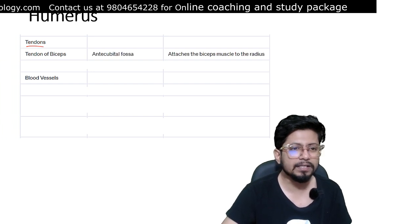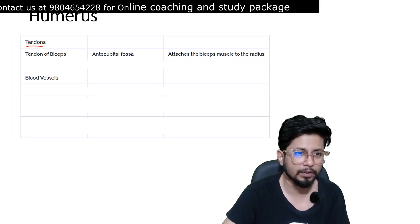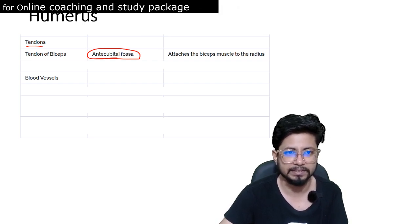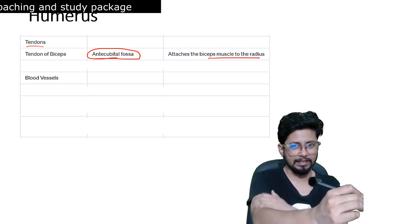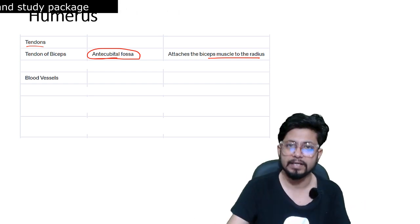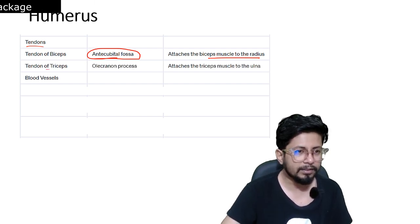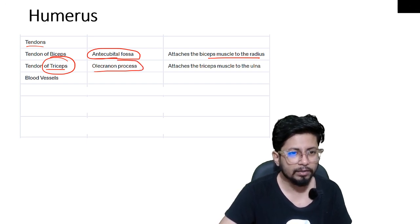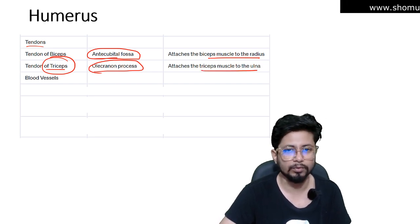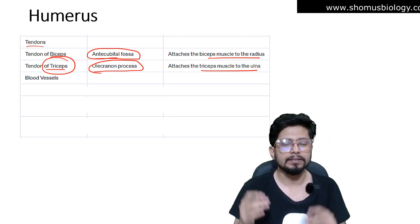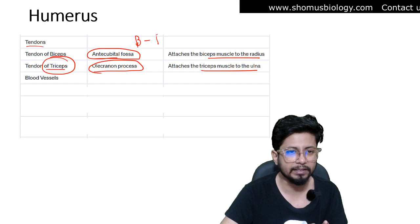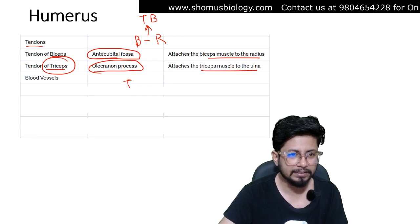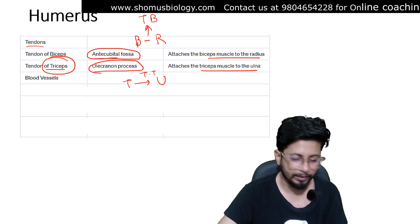The tendons present include the biceps tendon, located at the antecubital fossa — it attaches the bicep muscle to the radius. The tendon of the triceps is located at the olecranon process and attaches the tricep muscle to the ulna. So the bicep muscle is connected to the radius by the tendon of the biceps, and the tricep muscle is connected to the ulna by the tendon of the triceps.